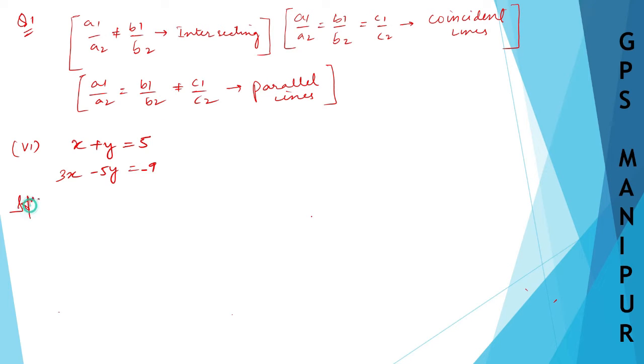Solution. Here a1 equals the number in front of x, which is 1, so a1 is 1. B1 equals the number in front of y, which is 1, and c1 equals 5. A2 equals 3, b2 equals minus 5, and c2 equals minus 9.